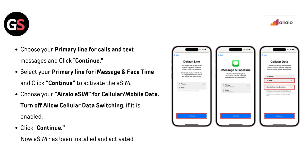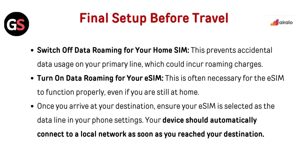Final Setup Before Travel: Switch off Data Roaming for your home SIM to prevent accidental data usage on your primary line, which could incur roaming charges. Turn on Data Roaming for your eSIM, as this is often necessary for it to function properly even while still at home. Once you arrive at your destination, ensure your eSIM is selected as the data line in your phone settings — your device should automatically connect to a local network.